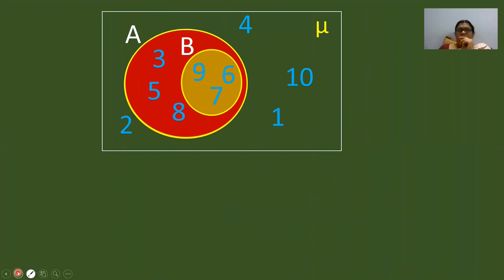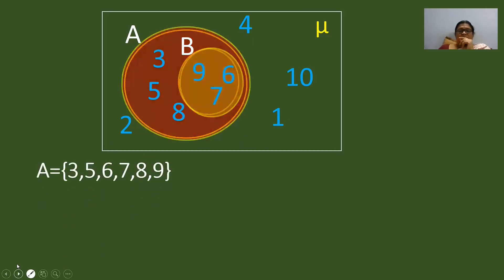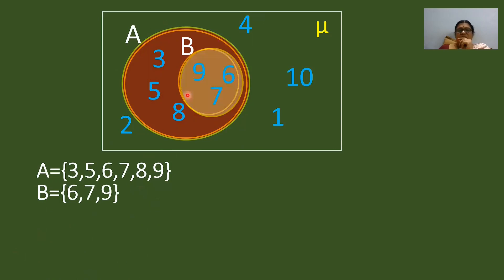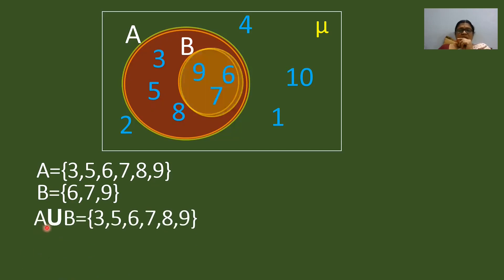We will start one more problem. When you look at this diagram, set B is completely within set A. We will write the elements of set A and set B. Set A contains all the elements: 3, 5, 8, 9, 6, and 7. Set B is the smaller circle inside set A, containing the elements 6, 7, and 9.